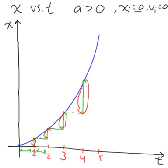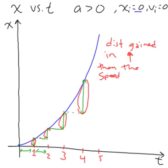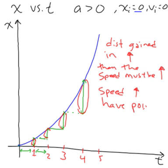It keeps getting larger and larger. If the distance gained is increasing, then the speed must be increasing. And if the speed is changing, you have acceleration. And if the speed is increasing, you have positive acceleration.